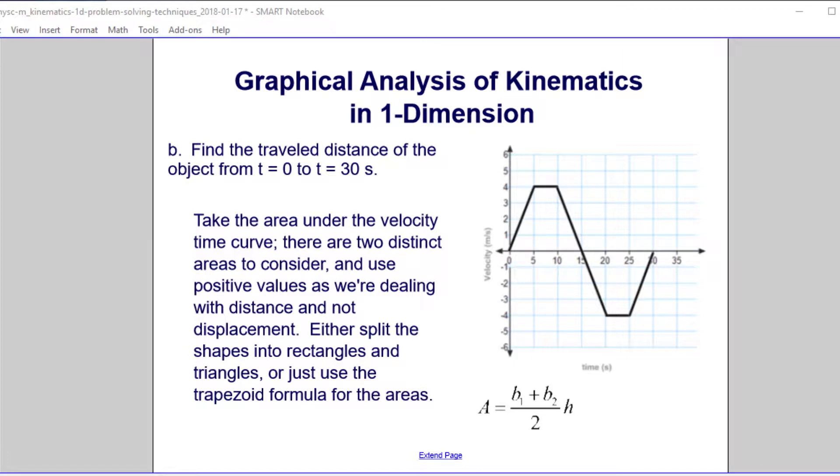We want to find the travel distance of the object from 0 seconds to 30 seconds. On a velocity time curve, you can find the distance and the displacement by taking the area under the curve. If we have velocity in the y direction, time in the x direction, what's velocity times time? That's just position.